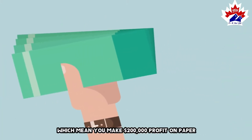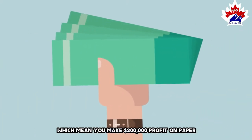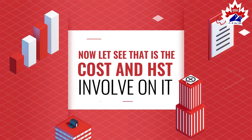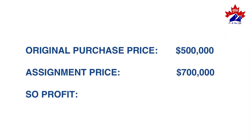This means you make a $200,000 profit on paper. Now let's see what the costs and HST involved look like. Original purchase price: $500,000. Assignment price: $700,000. Profit: $200,000.